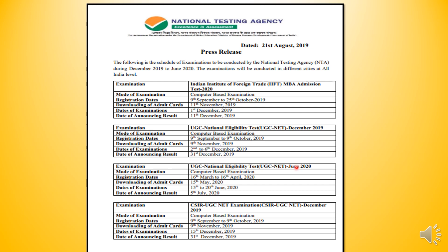Similarly, for June 2020, the schedule has also been given, because it happens twice a year. CBT mode — registration dates will be 16 March to 16 April. Admit card can be downloaded on 15 May. Date of examinations will be 15 to 20, and results will come on 5 July.